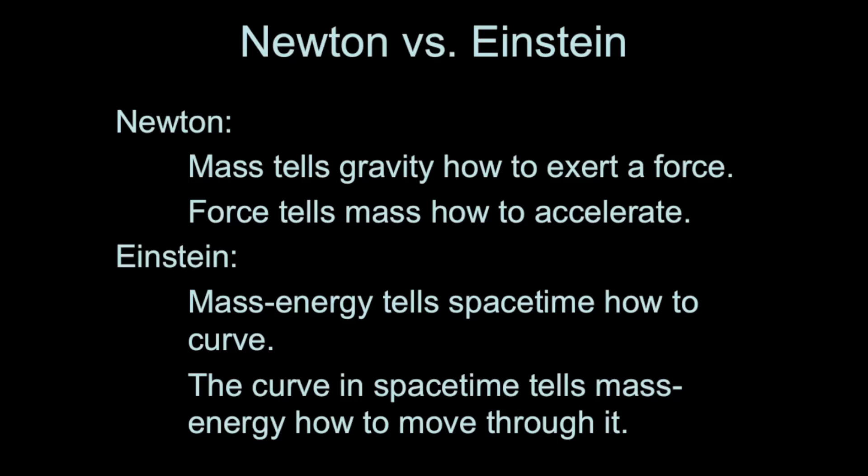So there are fundamental differences between the picture of the universe that we call the Newtonian picture from Newton's gravity and Newton's physics and Einstein's version of gravity and space-time. In Newtonian physics, mass tells gravity how to exert a force on it, and the force tells mass how to accelerate. But in Einstein's formulation, we describe mass and energy together. You might have heard of the famous equation E equals mc squared. And that is a relationship that describes how mass and energy are actually equivalent. And there's a lot of practical applications to that. In any case, mass-energy tells space-time how to curve around it, and the curvature in space-time tells mass-energy how to move through it.